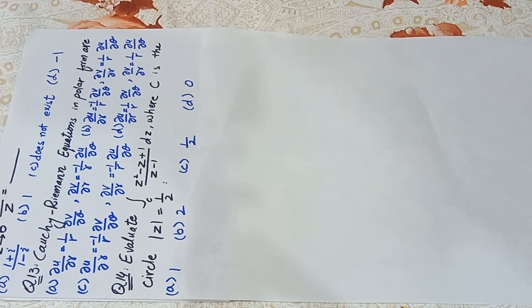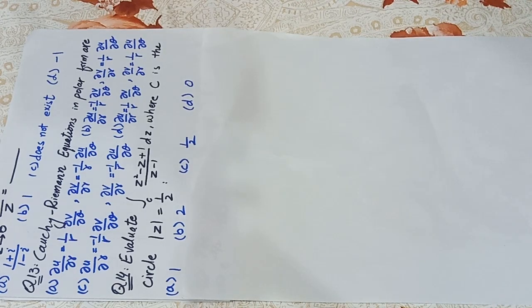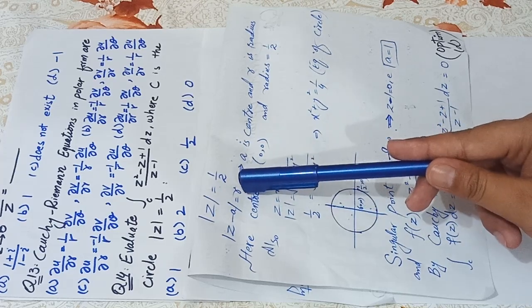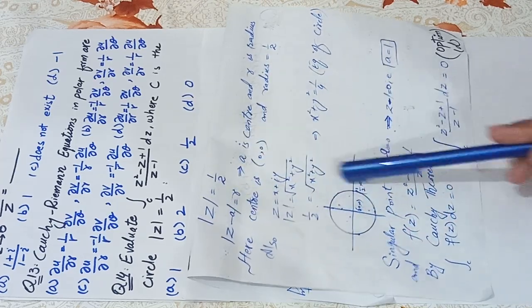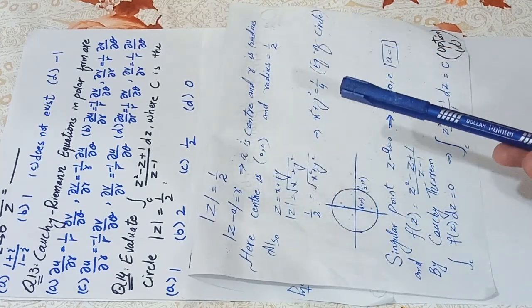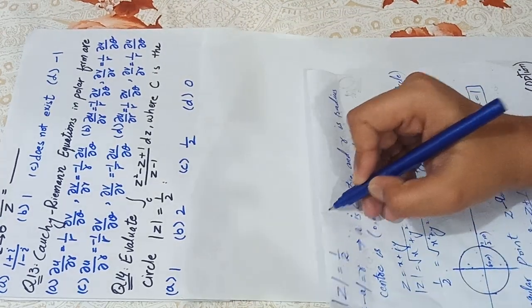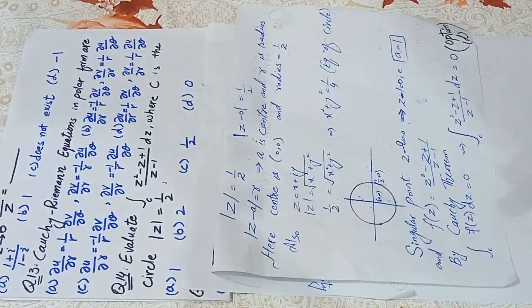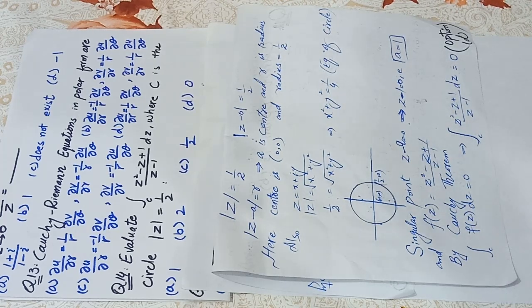Question 14: evaluate the integral along C of (Z² − Z + 1)/(Z − 1) where |Z| = 1/2. We know that |Z − A| = R means A is the center and R is the radius of the circle. Here |Z − 0| = 1/2, so the center A = 0 and radius R = 1/2. The circle is centered at the origin (0, 0) with radius 1/2.